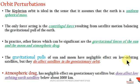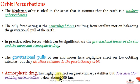The gravitational pulls of the Sun and Moon have negligible effect on low-Earth orbit (LEO) satellites, but they affect satellites in the geostationary orbit. A geostationary satellite has the same orbital period as Earth's rotational period — that is 24 hours — and appears stationary when viewed from Earth. Atmospheric drag has negligible effect on geostationary satellites but significantly affects low-Earth orbiting satellites below 1000 km.